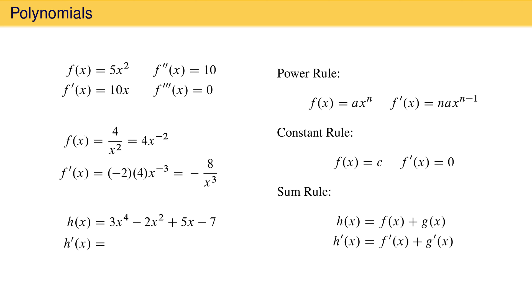The derivative of our example is therefore 12x cubed minus 4x plus 5. The second derivative can be evaluated easily using the sum, power, and constant rules as 36x squared minus 4.